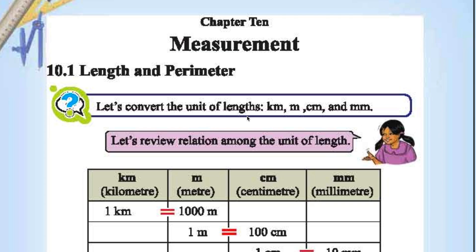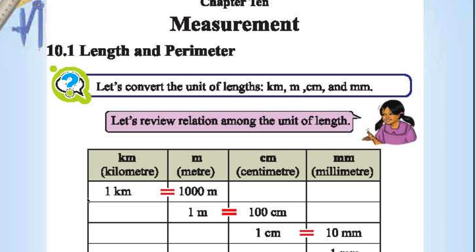Measurement. Let's convert the unit of length: kilometers, meters, centimeters, millimeters. 1 kilometer is 1000 meters, 1 meter is 100 centimeters, 1 centimeter is 10 millimeters.